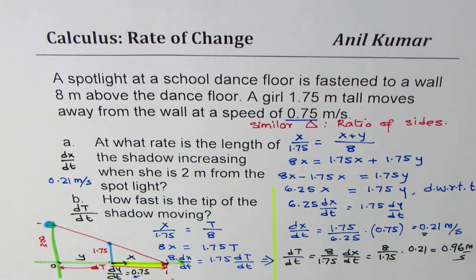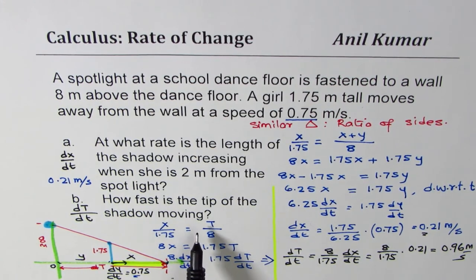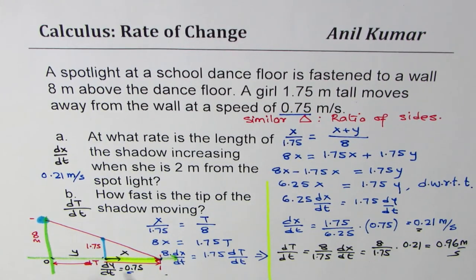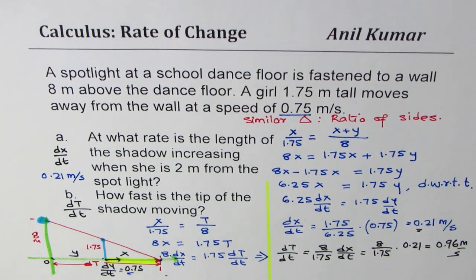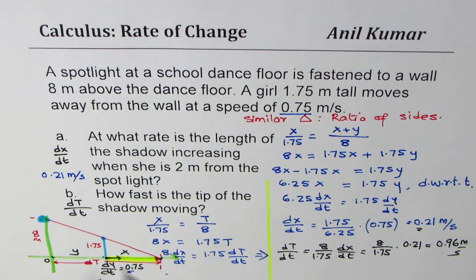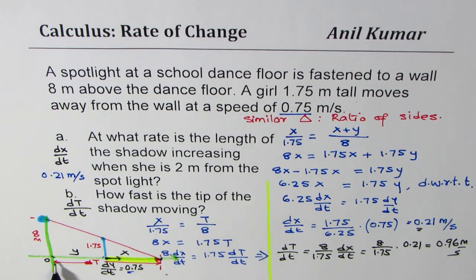I hope in this limited space I've done a good job explaining the concept. We'll take a few more questions on this topic for practice. Remember: such questions can be solved using similar triangles. When we say length of the shadow, we mean X. When we say tip, we take the total distance T. Thank you and all the best.